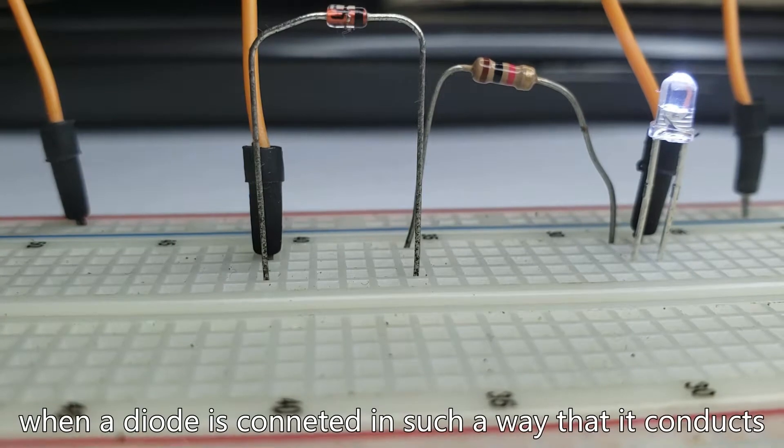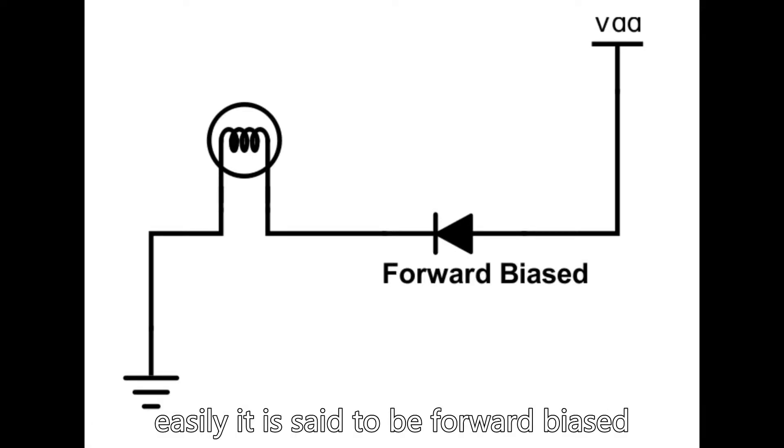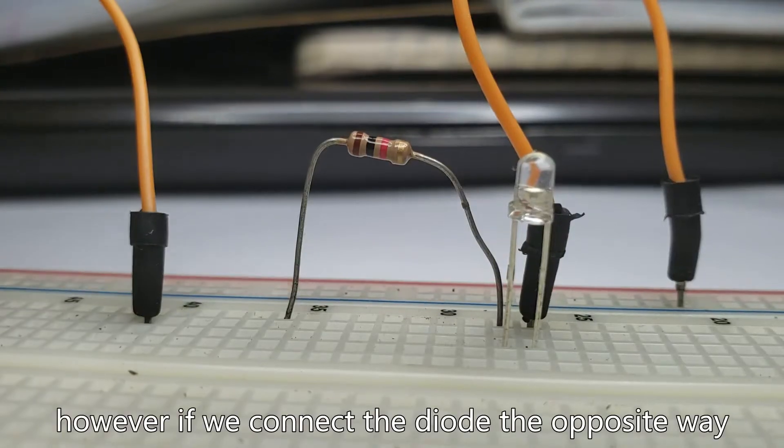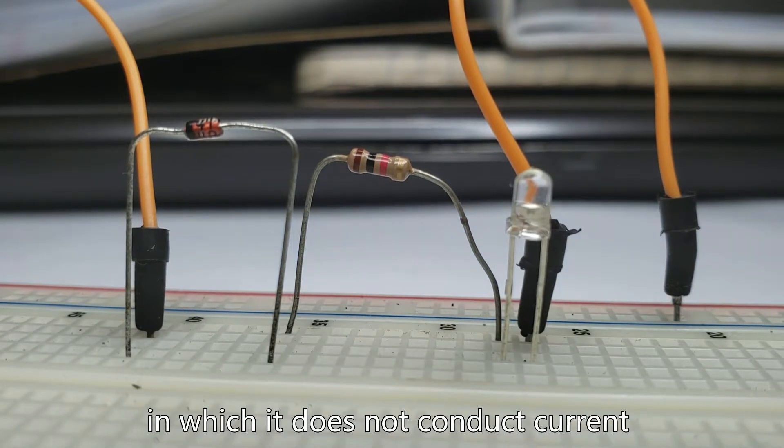When a diode is connected in such a way that it conducts easily, it is said to be forward biased. However, if we connect the diode the opposite way in which it does not conduct current, it is said to be reverse biased.